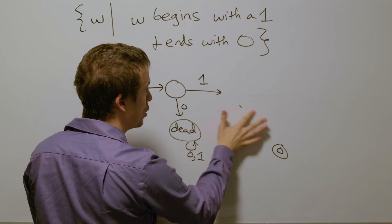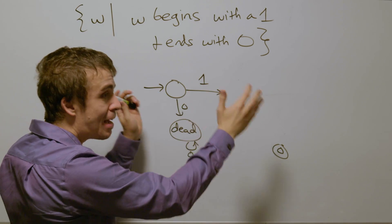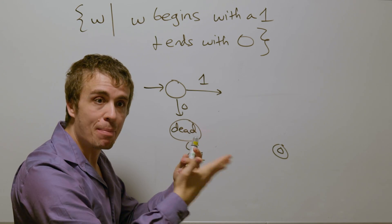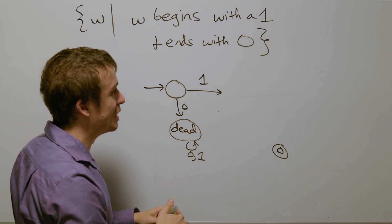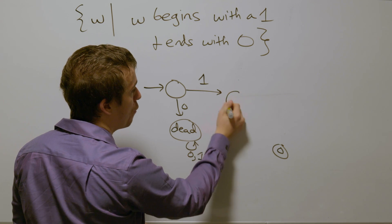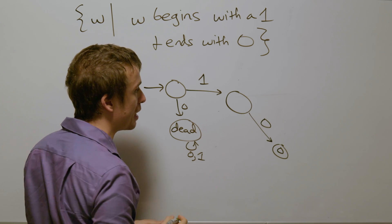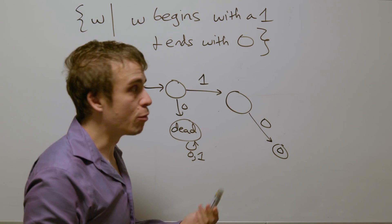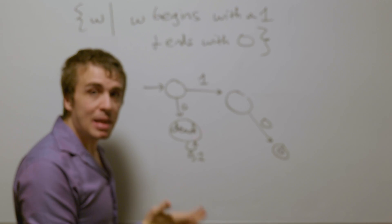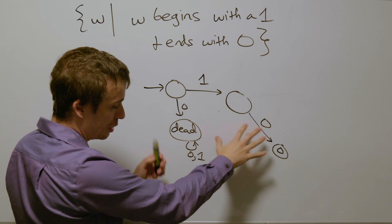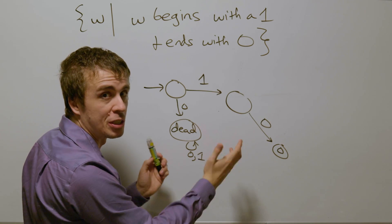Notice that once we start with one, we have to end with zero and that zero could be immediately after or it could be some place after. So if we have some state in the middle, and then that just goes to a final state on zero, then that is something that we would want to have. Now we need to focus on where the ones transitions and the zero and one transitions on this state go.